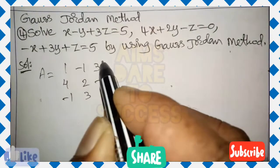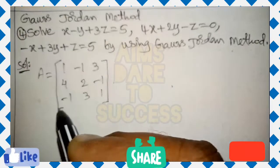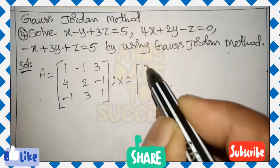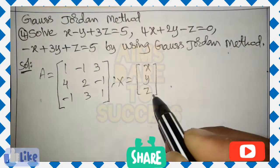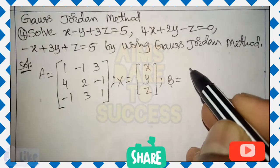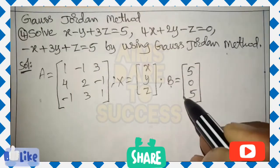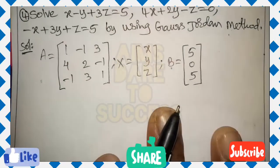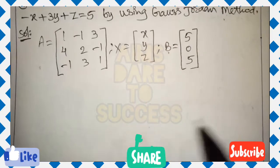We can write matrix A as the xyz coefficients from the three equations. From the first equation: 1, minus 1, 3. Second equation: 4, 2, minus 1. Third equation: minus 1, 3, 1. Matrix X is the column of variables x, y, z, and matrix B is the column of right-hand side constants: 5, 0, 5.